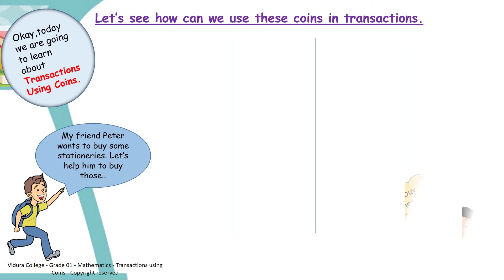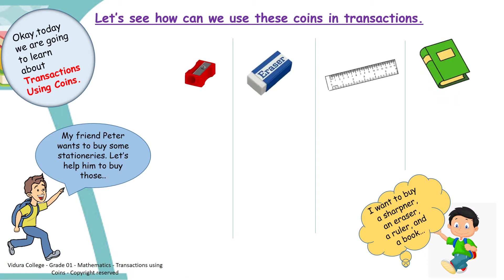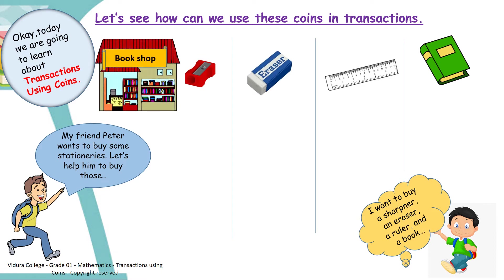Look at here. This is my friend Peter. He is saying he wants to buy a sharpener, an eraser, a ruler and a book. There is a book shop — he can take all the things that he needs from here. But how does he buy these things? Yes, to buy these things, Peter has to use the coins as money. Let's see how much these stationeries will cost.